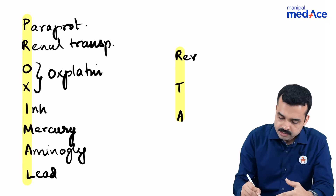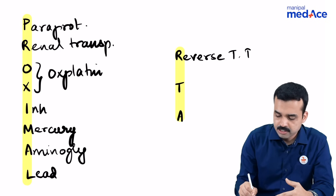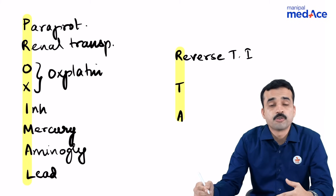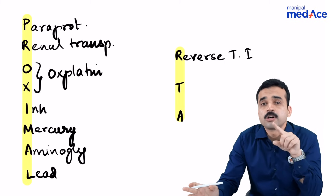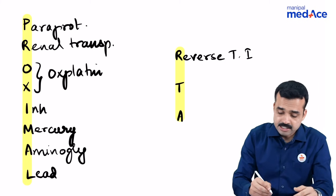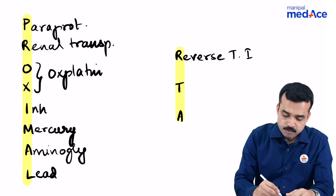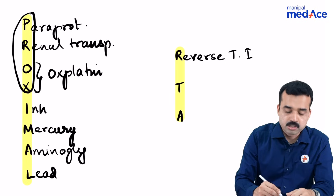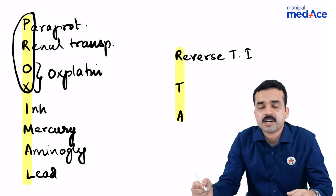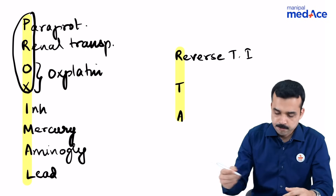R stands for reverse transcriptase inhibitors, that is tenofovir — specifically not tenofovir alafenamide, but tenofovir disoproxil fumarate (TDF).